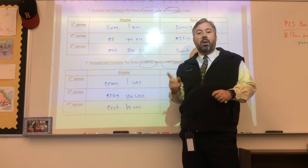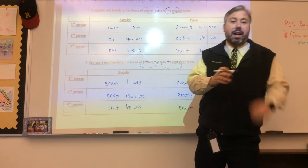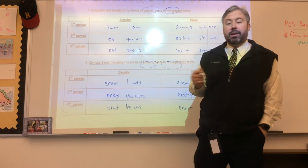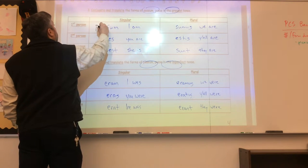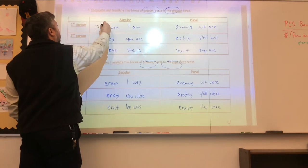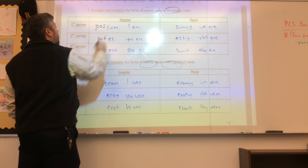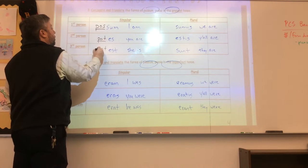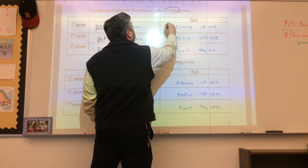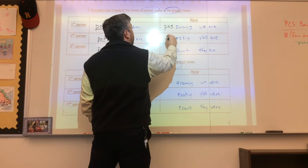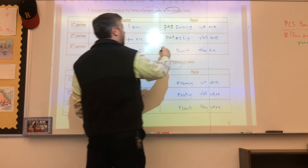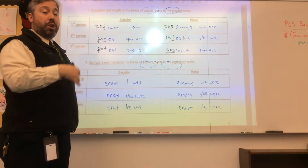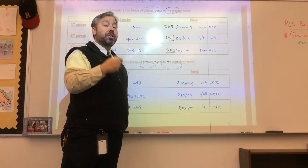For the present tense forms of to be, watch what happens. I'm going to add the letters either POS or POT in front of the forms of to be. So we got possum, we got potes, we got potest. In the plural we get possumus, potestis, and possunt.